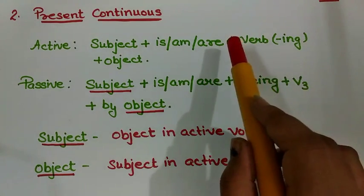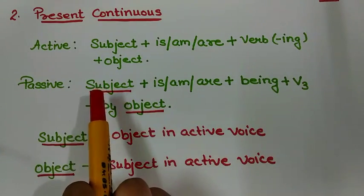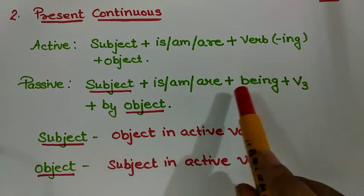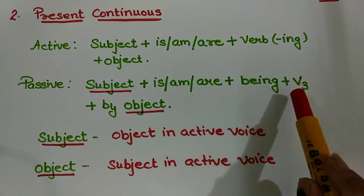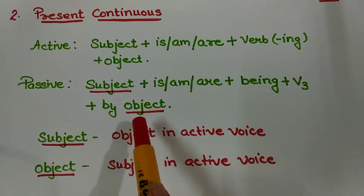When we convert this active into passive, then it becomes: subject, then is/am/are (the helping verbs), then being plus third form of verb, and then comes by object.